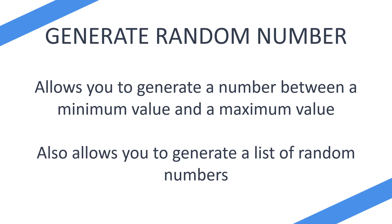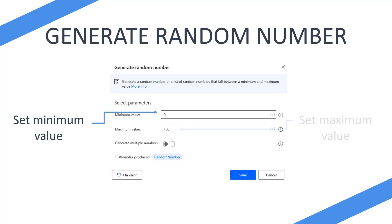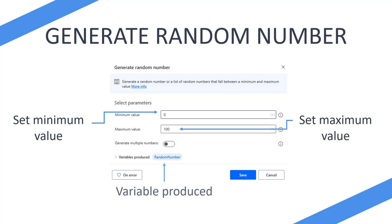So what does this look like on Power Automate Desktop? When you first add the action, you're going to see the Generate Random Number action appear on your screen. You're going to want to set a minimum value and then a maximum value, and you're going to get a randomly generated number between those two values. What's going to happen then is you're going to get a variable produced called 'Random Number' — that's the default, but you can change the name. So every time this action runs, you'll get a number between zero and a hundred produced in that variable.